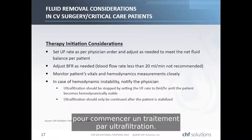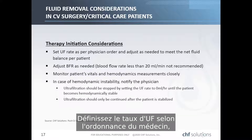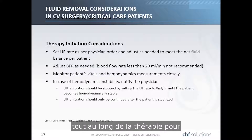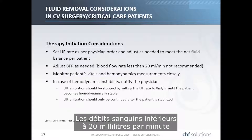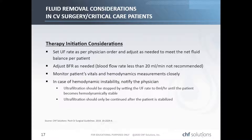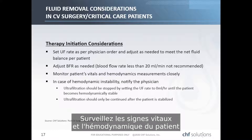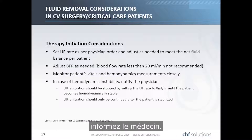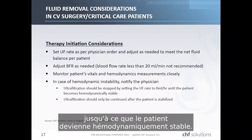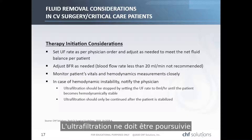When initiating ultrafiltration therapy, set the UF rate per physician order, adjusting as needed throughout therapy. Adjust the blood flow rate as needed; blood flow rates below 20 mL per minute are not recommended. Monitor the patient's vital signs and hemodynamics. In the case of hemodynamic instability, notify the physician. Ultrafiltration may need to be stopped by setting the UF rate to zero until the patient becomes hemodynamically stable, and should only be continued after stabilization.